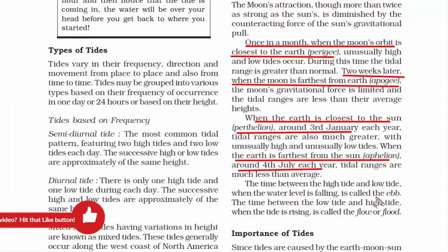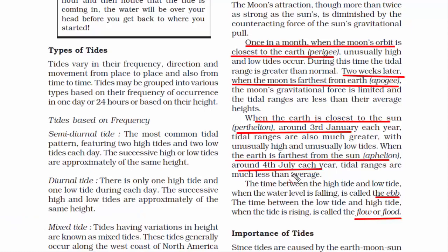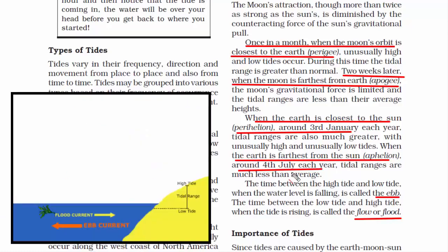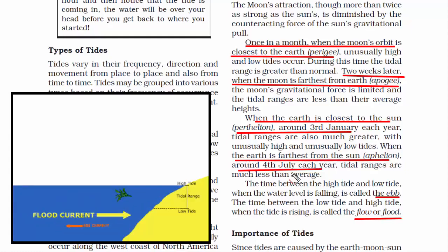Two more terms: ebb and flow are two phases of the tide or any similar movement of water. The ebb is the outgoing phase — when the water level is falling. And the flow is the incoming phase — when the water rises again.